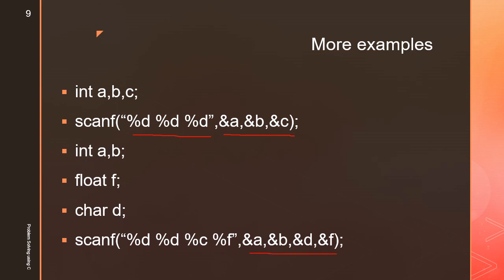For example, if we apply the corresponding data type, the control string will specify: %d for integer A, %d for integer B, %c for a char variable, and %f for a float. This allows scanf to handle multiple data types and variables in a single statement.